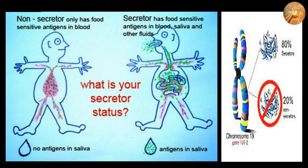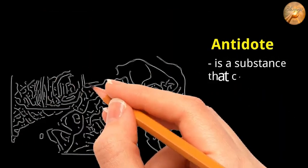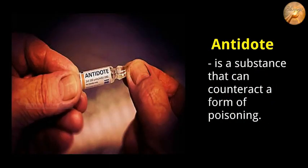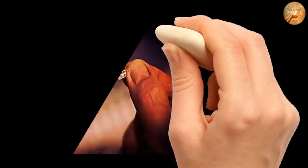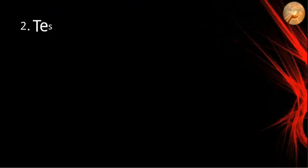According to studies, around 80% of people around the world are secretors and the other 20% are non-secretors. An antidote is a substance that can counteract a form of poisoning. Neutral is just a distraction. Again, the correct answer for number one is letter A, secretor.